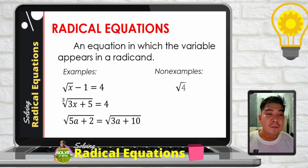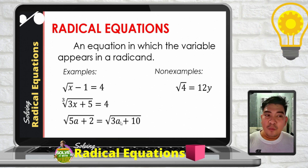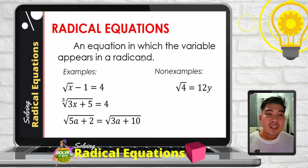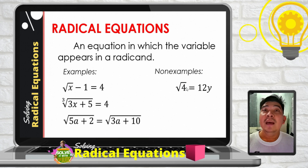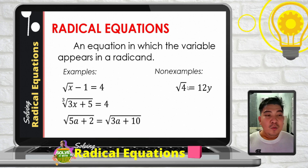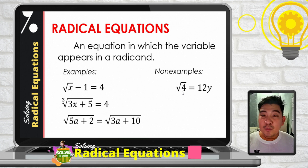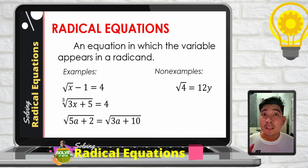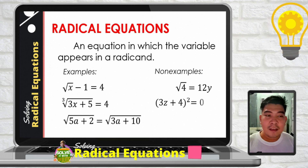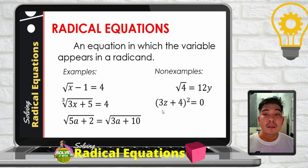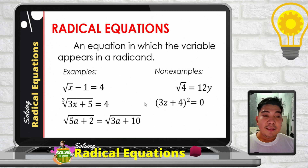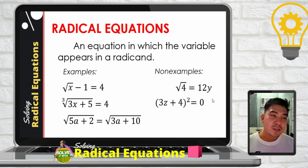Now for non-examples: the square root of 4 is equal to 12y does not satisfy the definition of a radical equation, because there is no variable inside the radicand. When you extract the square root of 4, it produces a linear equation. Another non-example is the quantity 3z plus 4 squared equals 0 — this is a quadratic equation, not a radical equation.